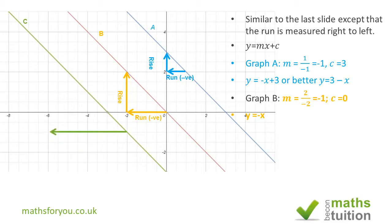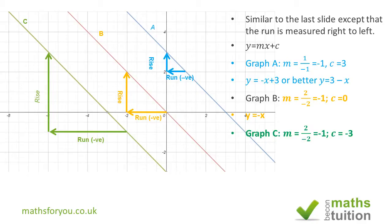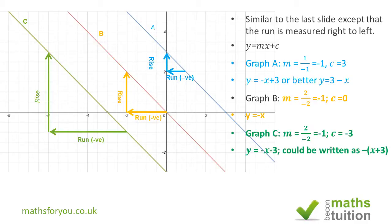For graph C, the rise is 4 and the run is minus 4, so 4 ÷ (−4) = −1. This graph crosses the y-axis at minus 3, so the equation of graph C is y = −x − 3, or equivalently y = −(x + 3). In the exam, if asked to explain the properties of y = −(x + 3), expand the brackets to get y = −x − 3: gradient is −1 and y-intercept is −3.